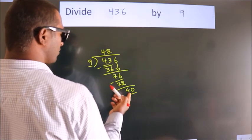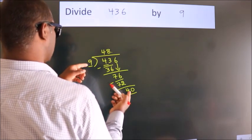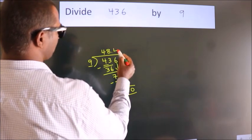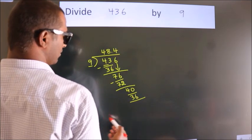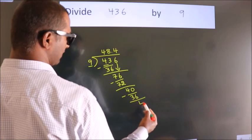A number close to 40 in the 9 table is 9 times 4 equals 36. Now we subtract and get 4.